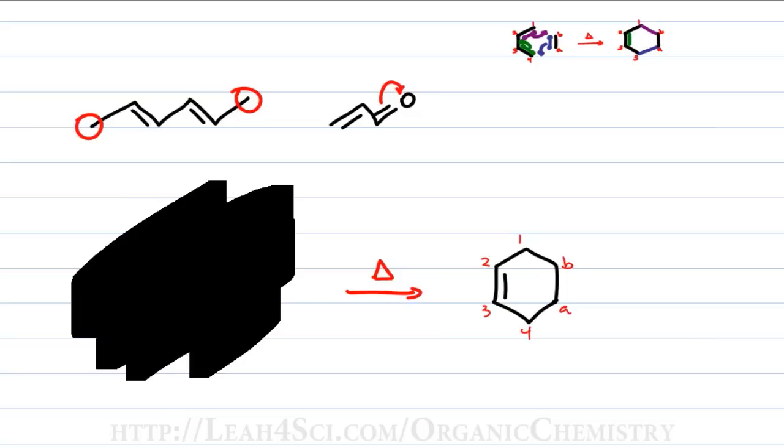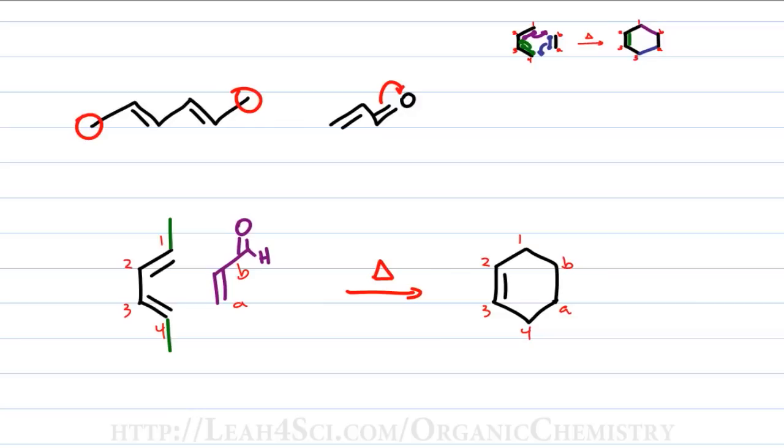We have the starting product and now we look back at the starting molecule. Carbons 1 and 4 both have methyl groups so we give them their groups. A and B have an aldehyde attached at B so we'll put the group right there. And here's our product.